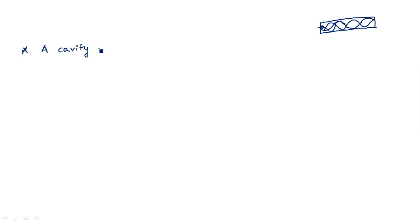Let me explain the theory point by point. A cavity resonator: it is called a 'cavity' because it is a closed waveguide closed on either ends, and it is called a 'resonator' because the signal has a maximum amplitude at a particular frequency.